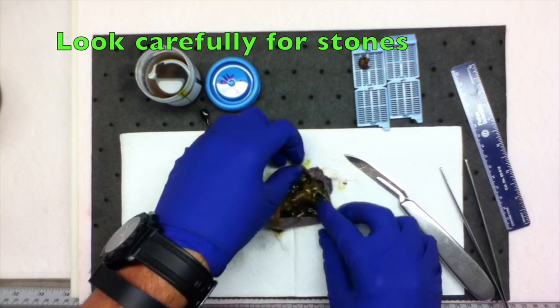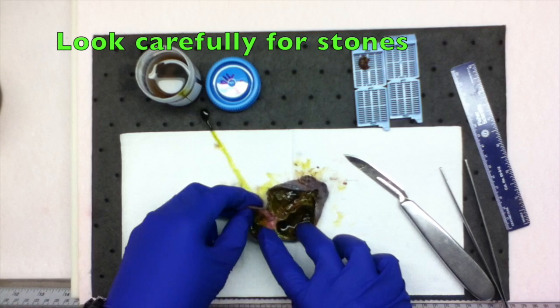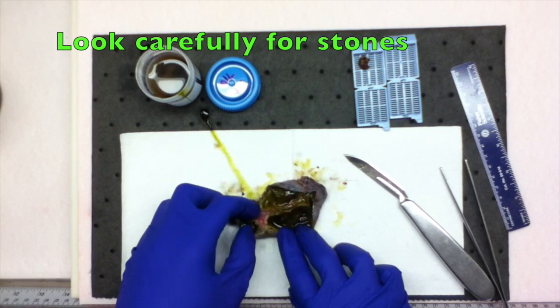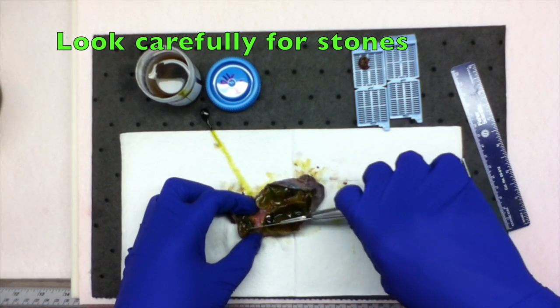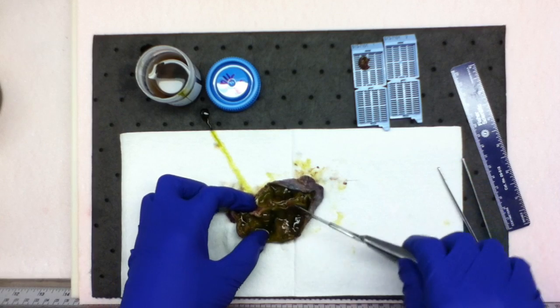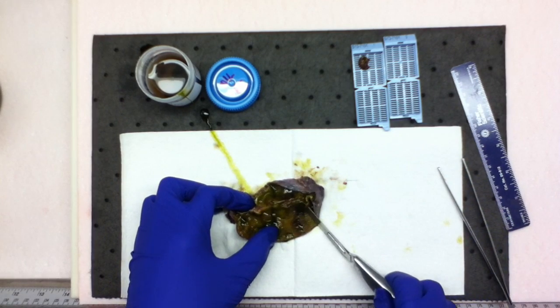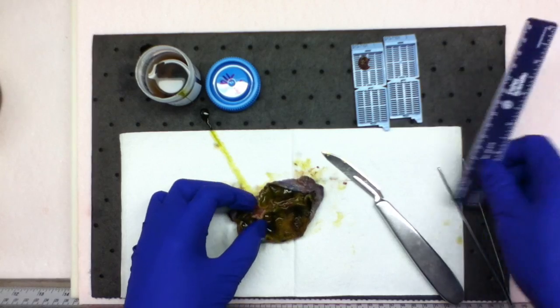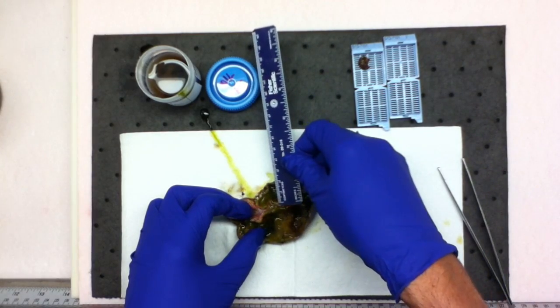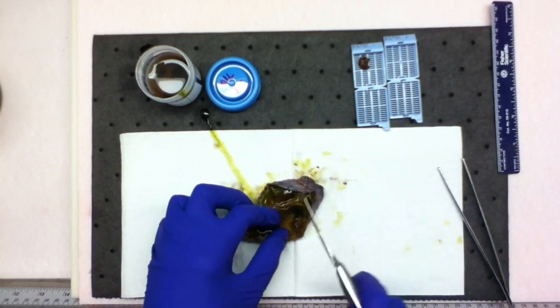Opening reveals abundant amounts of dark green viscous bile and no stones. The mucosa is dark green and granular. Wall thickness averages 0.3 cm.